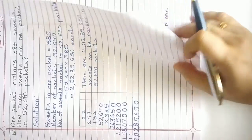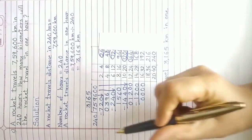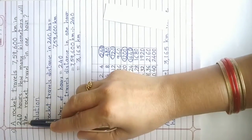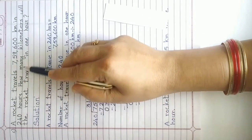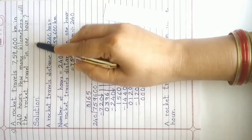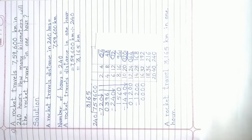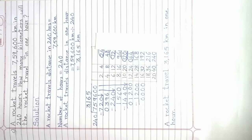Let's solve the next question. Question number C: A rocket travels 7,59,600 km in 240 hours. How many kilometers will the rocket travel in one hour? What do we have to do — multiplication or division? 240 hours is given and find out one hour. Means more is given and find out one, so we have to do division.